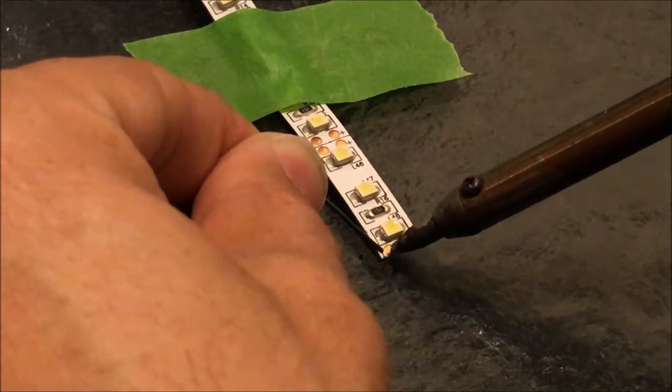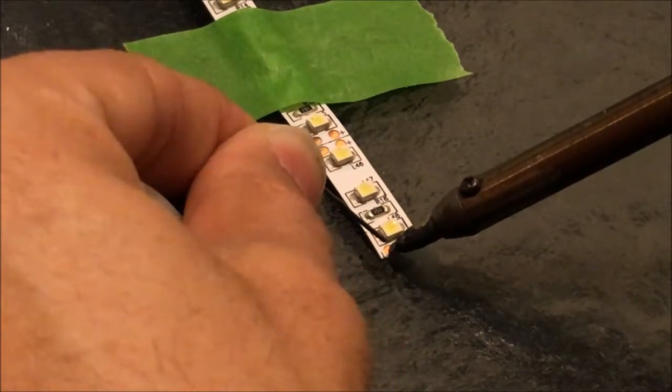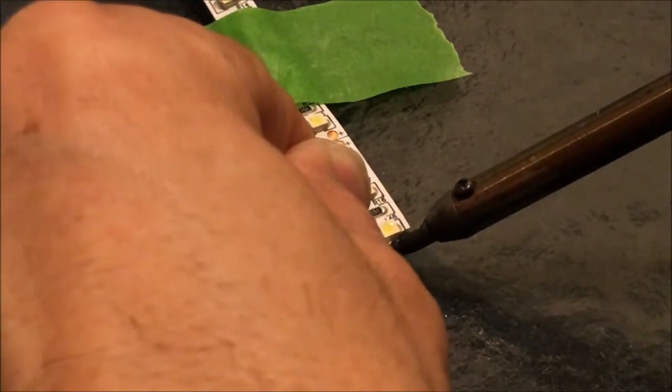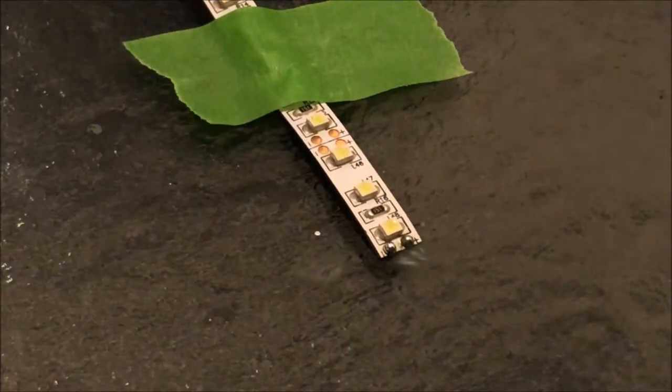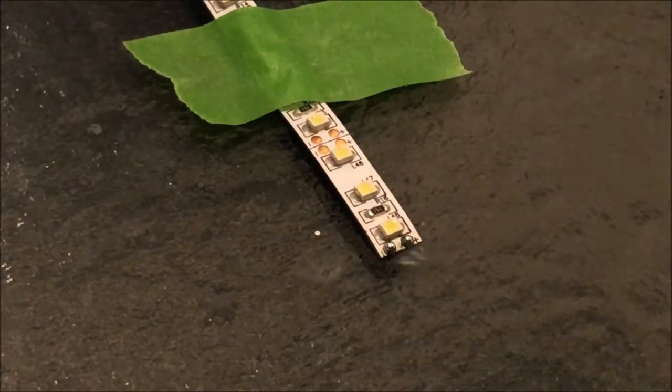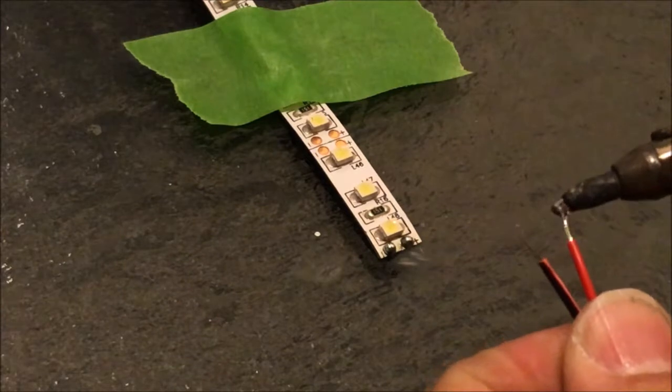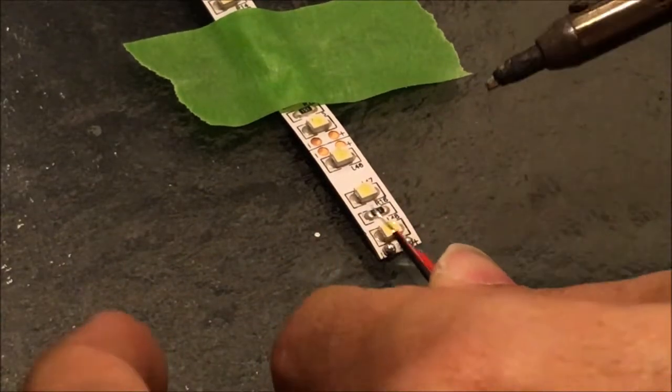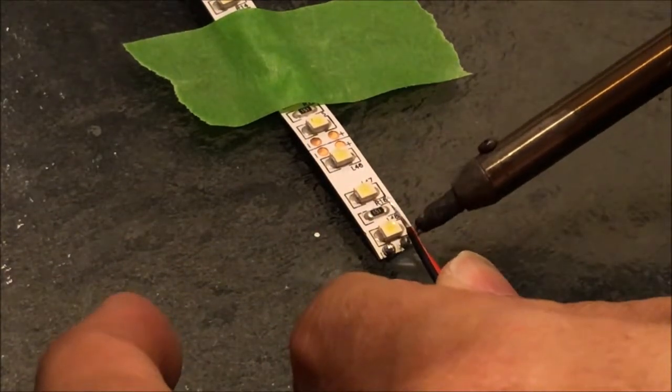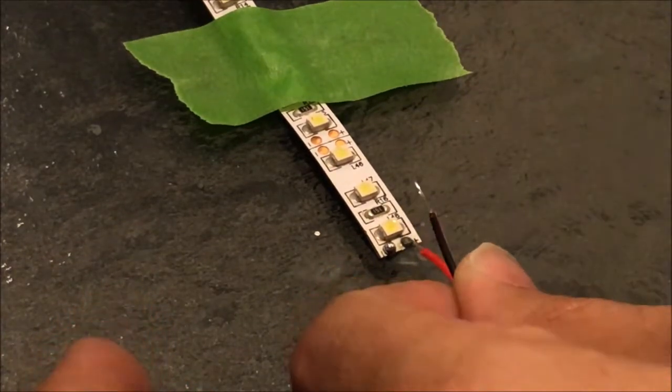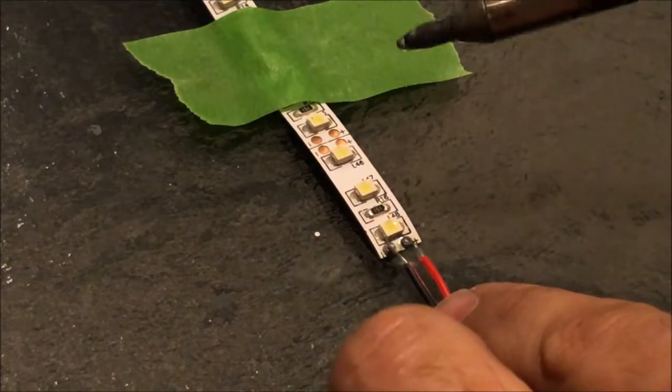I'm going to drop that little drop of solder on. Once again, heat my connector with the soldering iron. Put a little drop of soldering iron on it. All right. I've got a little bit of solder there. I've got a little bit of solder on my wire. And we're just going to make this connection. All right. There's our positive connector.